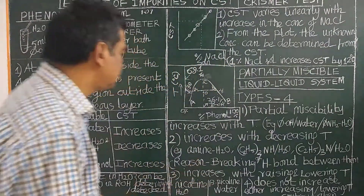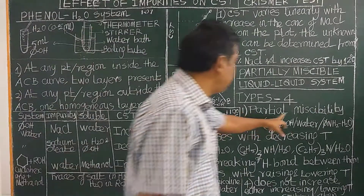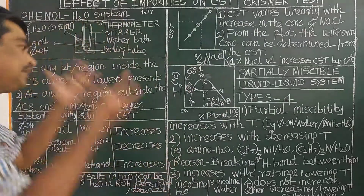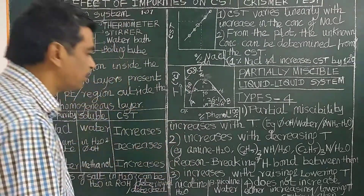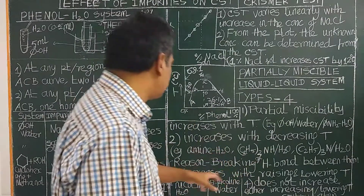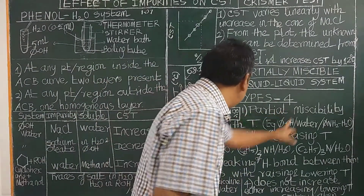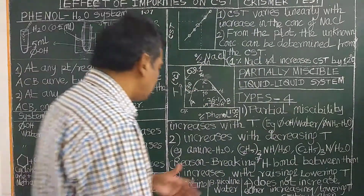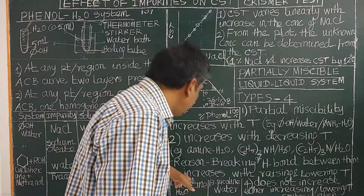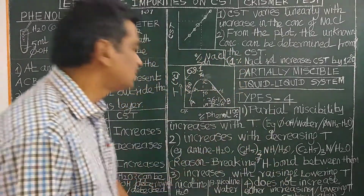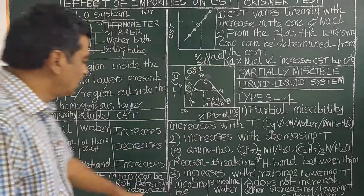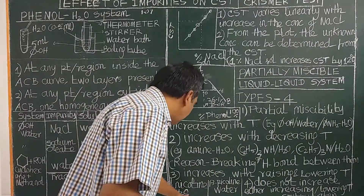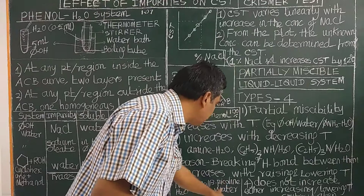Type 3 combines both cases: partial miscibility increases with both rising and lowering temperature. Such a system has both an upper CST and a lower CST. The example is the nicotine-water system.